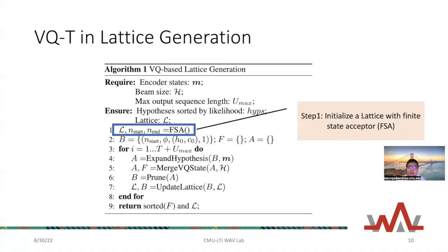By using discrete units generated from the hidden states, which we refer to as the codebook, we have a fixed codebook without a very large space of different vectors. We can fix to a specific number of entries, and by using these discrete tokens we can efficiently merge hypotheses in lattice generation.